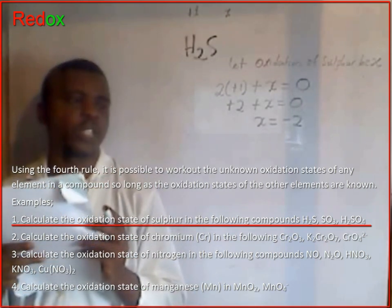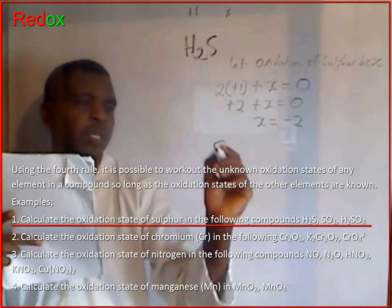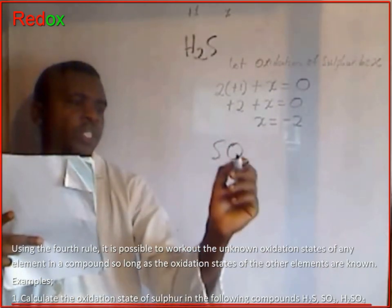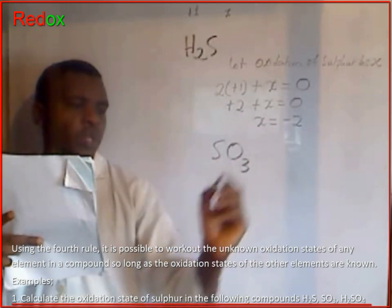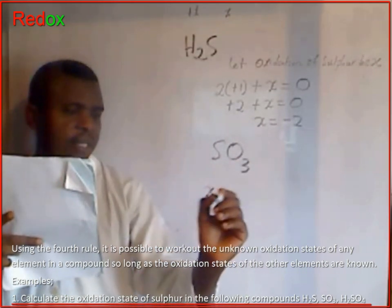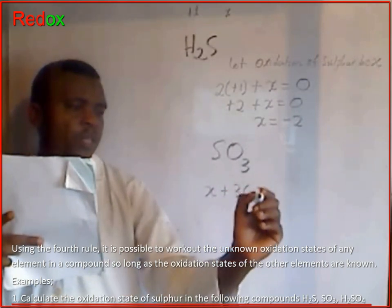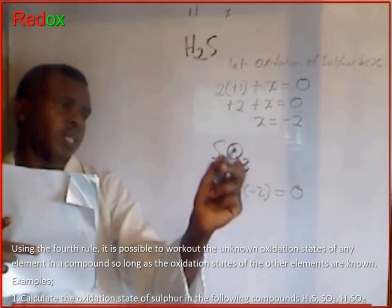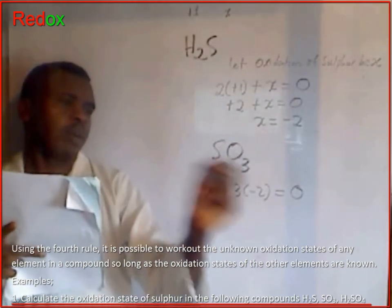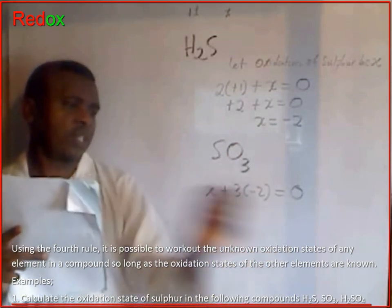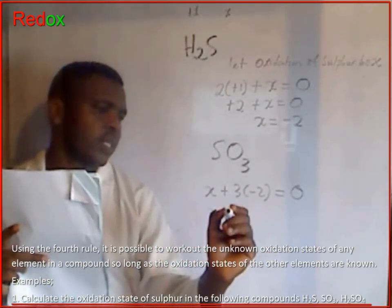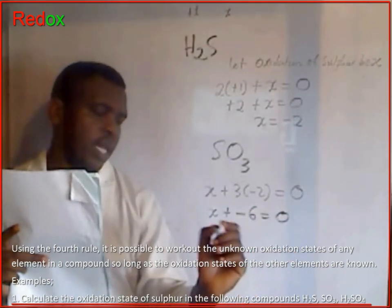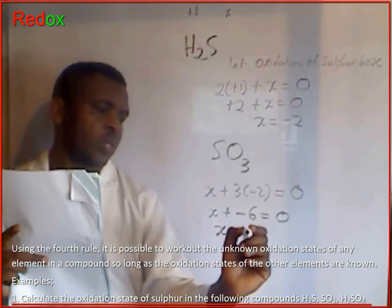For sulfur trioxide, we have x plus 3 times minus 2 equals 0. Because this is a compound, the algebraic sum of oxidation states gives us 0. So x plus minus 6 equals 0, therefore x equals plus 6.